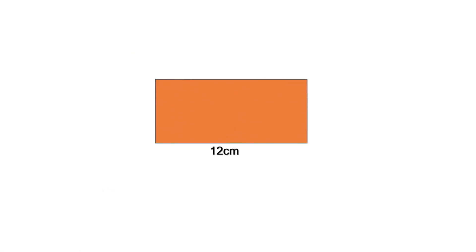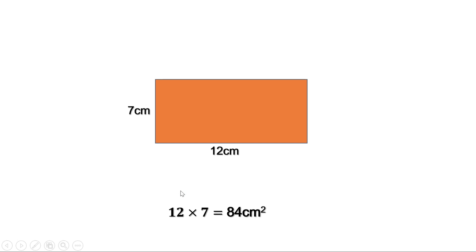Let me take a rectangle. The length is 12 cm and breadth is 7 cm. What is the area of this rectangle? We know area of a rectangle is length into breadth. Here length is 12 and breadth is 7, therefore area is 12 into 7 or 84 cm square.